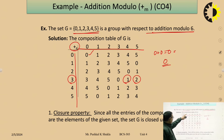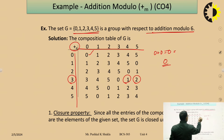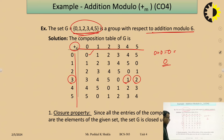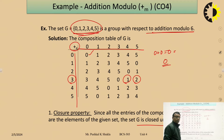Closure property: since all the entries in the composition table are 0, 1, 2, 3, 4, 5 — all elements of G — all entries are elements of G. Therefore G is closed under addition modulo 6.